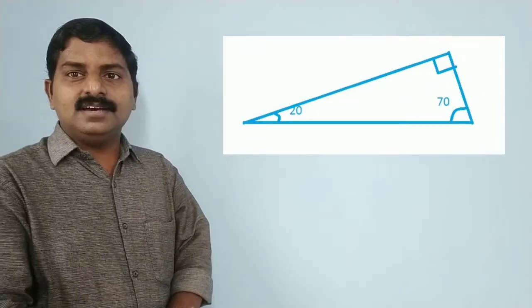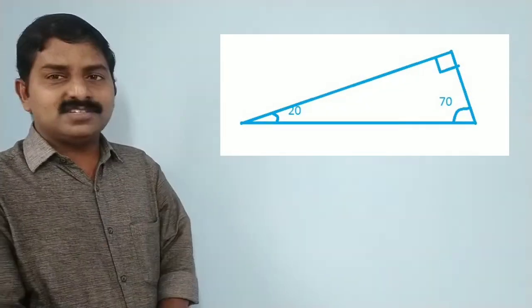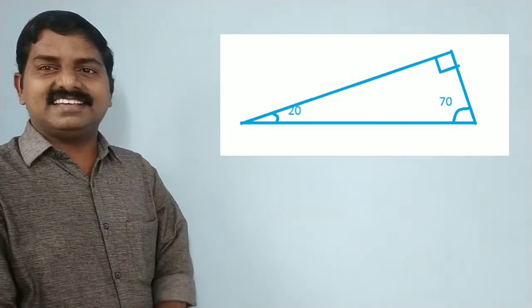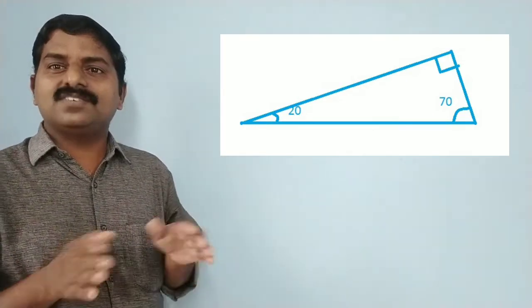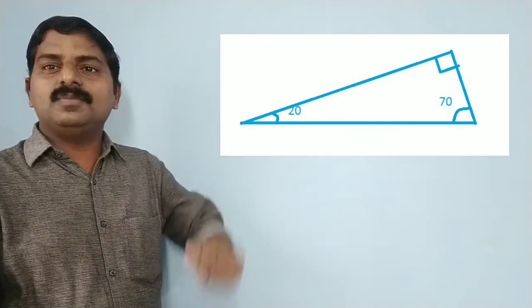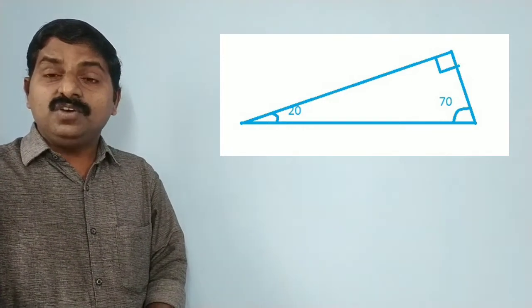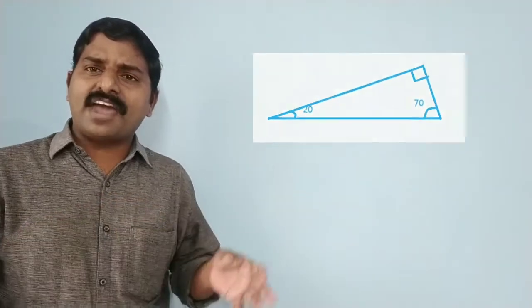Instead of 30 and 60, I am taking another pair — see the figure: 20 degrees and 70 degrees. 20 plus 70 equals 90, therefore the third angle becomes 90. So we can take many pairs of angles. The condition is that the sum of these two angles equals 90 degrees.